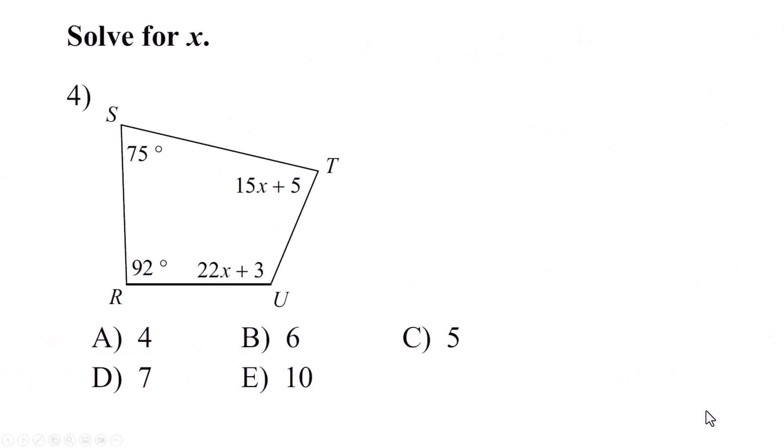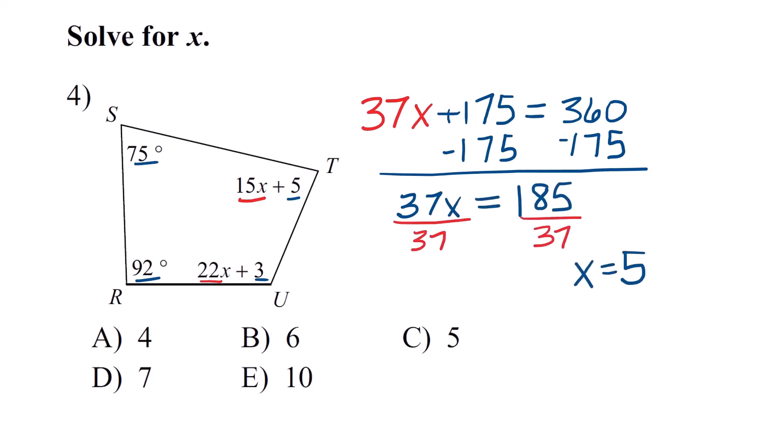Solve for X. The same concept but it's a little more difficult now because we have some algebraic expressions in here. Let's add the X's together first. I have 15X and 22X. That's 37X. Now add in all the number pieces. 75 plus 5 plus 3 plus 92. That's going to be 175 and all of that's equal to 360 degrees. So just solve this equation like you did in algebra. We'll subtract 175 from both sides and we end up with 37X equals 185. Divide both sides by 37 and we get X equals 5 and that's all we were supposed to do is solve for X so the correct answer is C.